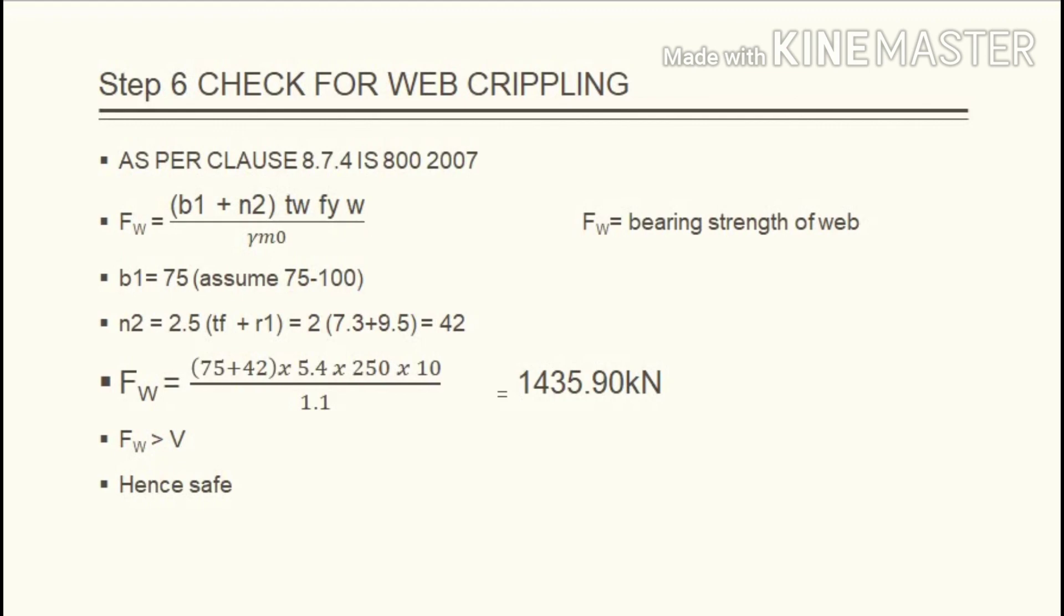Check for web crippling. As per clause 8.7.4 IS800 2007, Fw, bearing strength of web, equals B1 plus N2 multiplied by Tw, thickness of web, times yield stress times W divided by gamma M0. B1 equals 75, we can assume any value between 75 and 100. N2 equals 2.5 times thickness of flange plus R1. Thickness of flange is 7.3 and R1 is 9.5. Substituting we get N2 equals 42. So Fw equals 75 plus 42 times 5.4 times 250 times 10 by 1.1, which equals 1435.90 kilonewton. Hence Fw is greater than shear force. Hence it is safe.